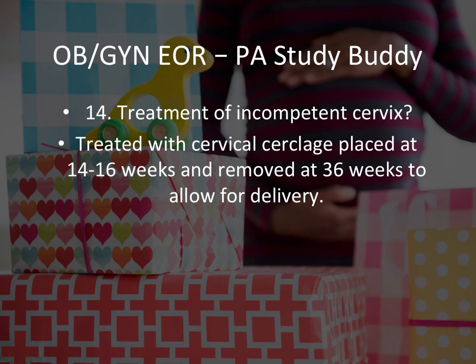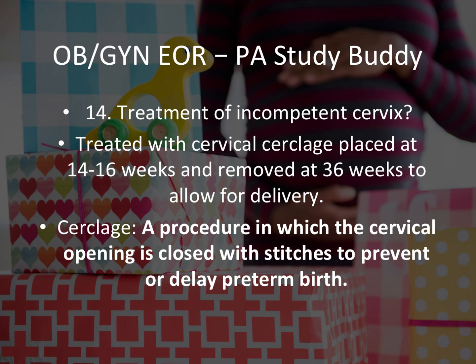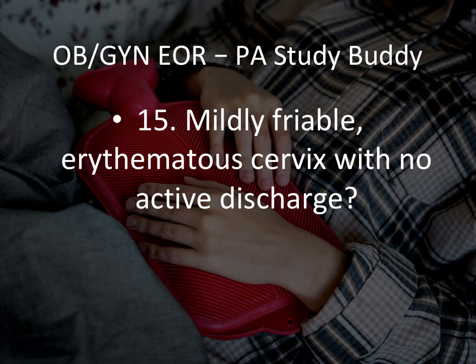Question 14: Treatment of incompetent cervix. The patient had funneling on ultrasound and a reported second-trimester miscarriage — the best treatment is cervical cerclage, placed between 14 and 16 weeks. Another question could be when it is removed — that is 36 weeks to allow for delivery. Cerclage is a procedure where stitches are used to prevent preterm birth.